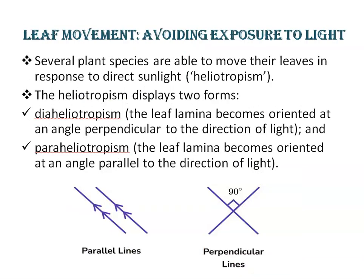Next is leaf movement avoiding exposure to light. Several plant species are able to move their leaves in response to direct sunlight — this is called heliotropism. Leaf movement is also affected by ambient growth conditions such as light intensity, temperature, water availability, and nutrient availability.